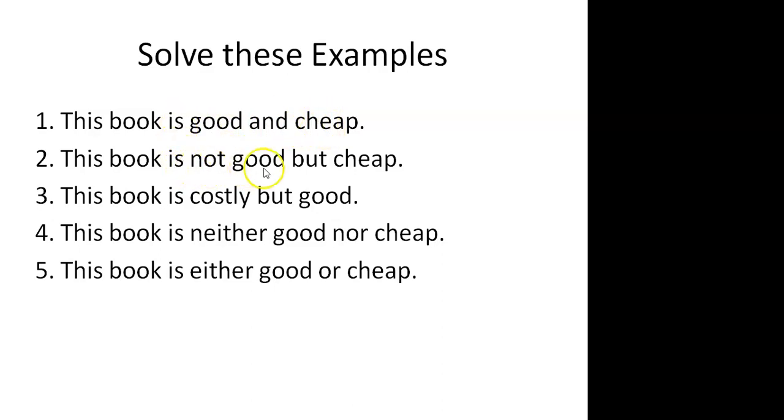If we say that the book is not good but cheap, we will say negation of A and B. Then if we say that the book is costly but good, we have A and negation of B, because B represents that the book is cheap but now we are saying that the book is costly, so it is a negation of B.